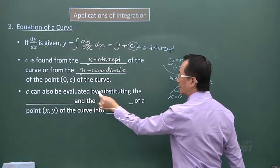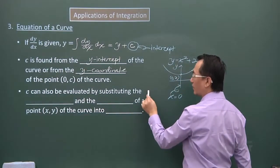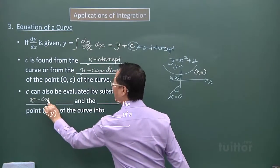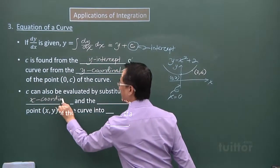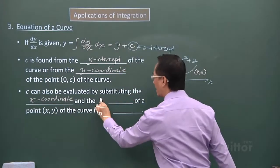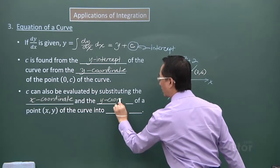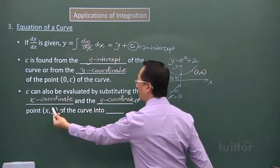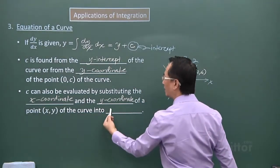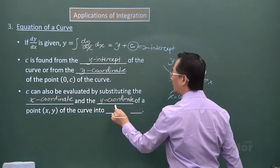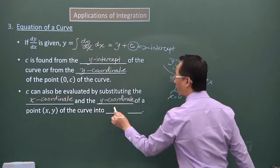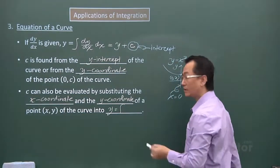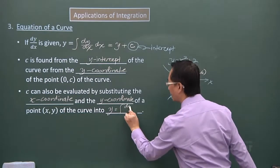So, c can be evaluated by substituting the, I'm looking at this, the x coordinates and the y coordinates of a point (x, y) of the curve into this form. Y equals indefinite integral of the first derivative with respect to x.